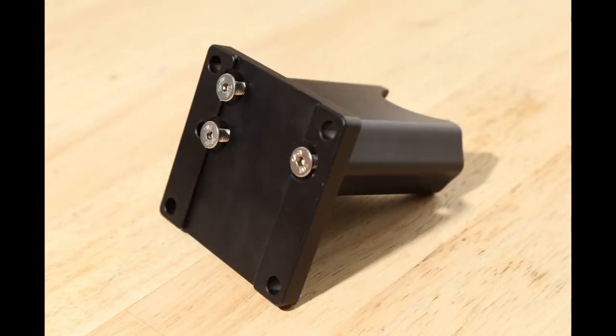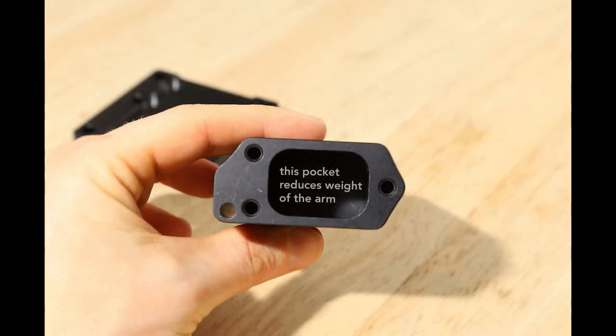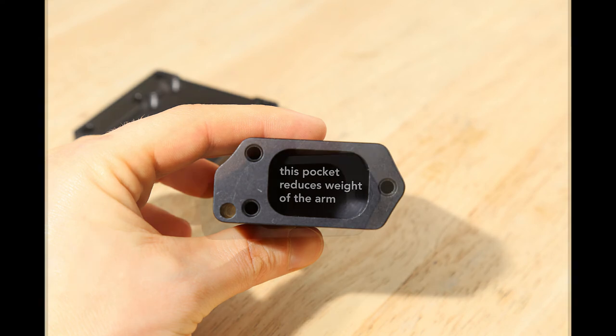Lastly we can unbolt this plate from the main arm piece. We can see that there is a large pocket machined into this hole. The pocket reduces the weight of this piece which in turn reduces the torque on the vertical drive of the printer.